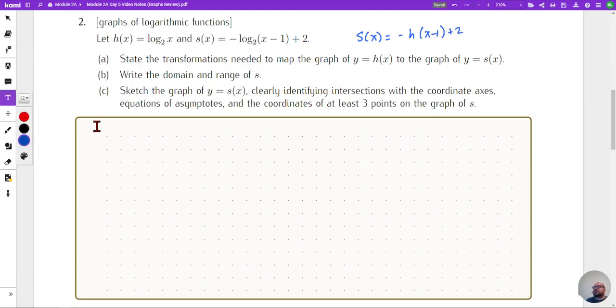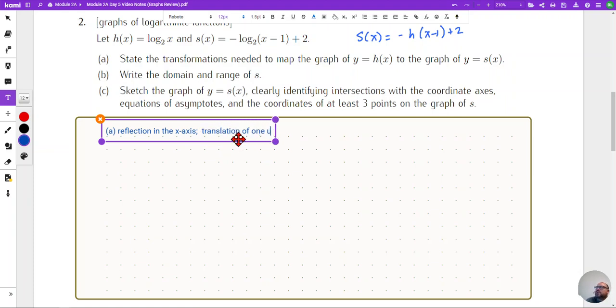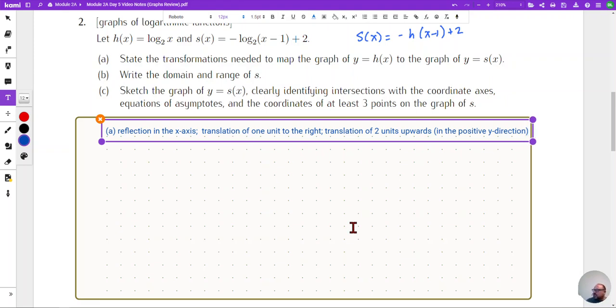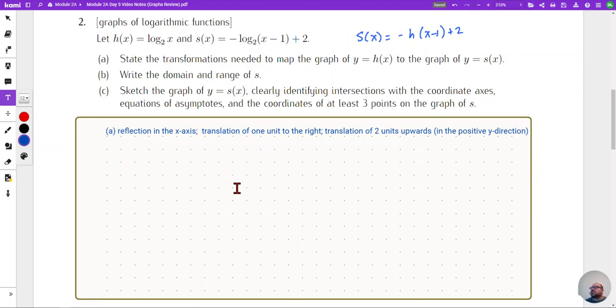All right so the transformations that I have for part a seem to be that I'm going to have a reflection in the x-axis, then a translation of one unit to the right, and lastly a translation of two units upwards, or in the positive y direction. So that is what we have for our translations.